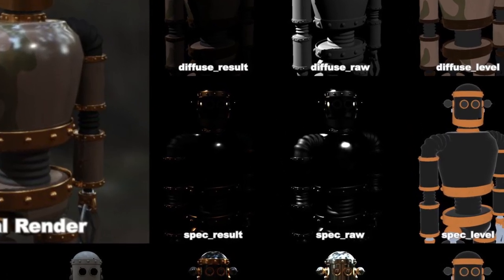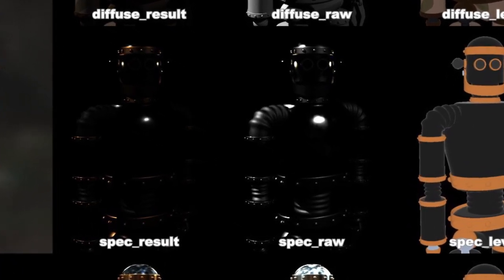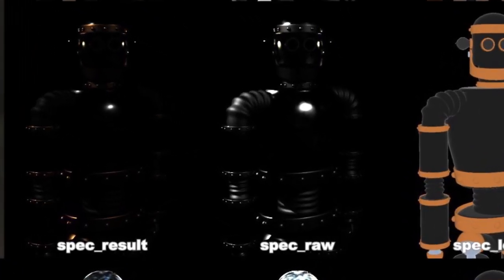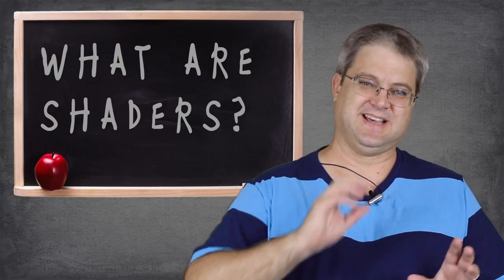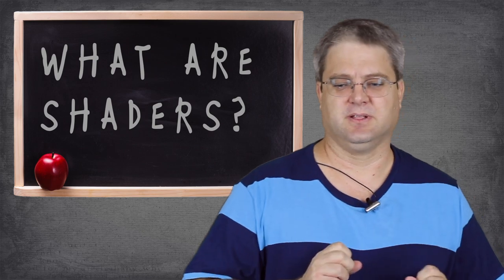Similar to reflectivity is specularity. This is the hot spot of an object, or the reflection of the light source itself. Think of a polished apple, and you see that little bright spot on the apple when the light is hitting it. That is specularity.